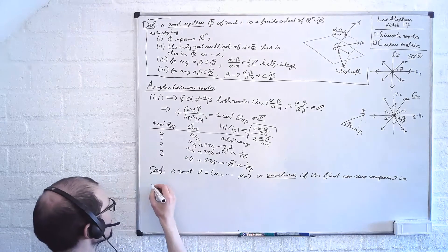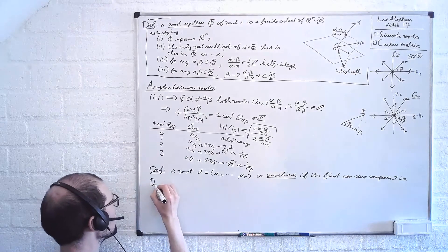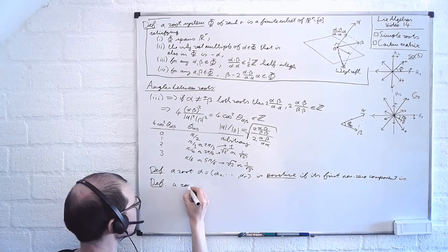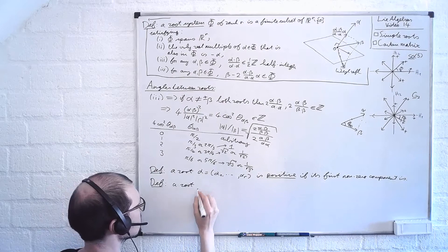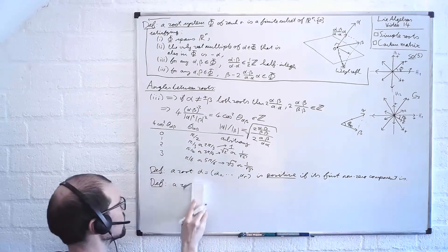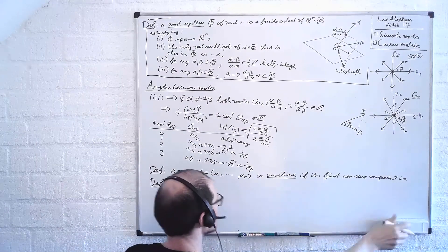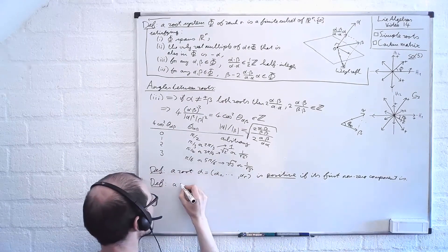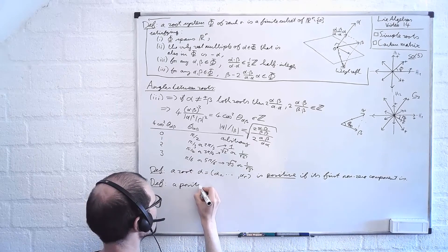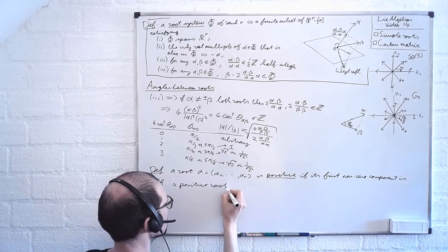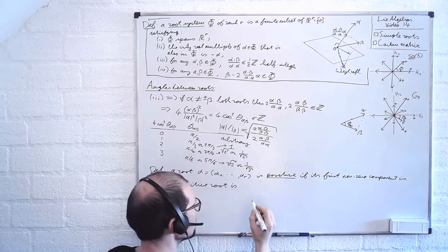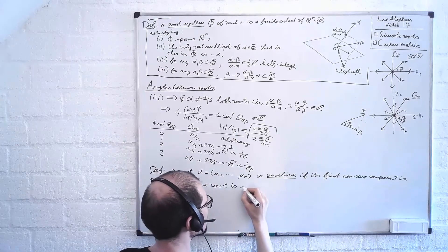And then I say that a positive root is simple if it is not the sum of two other positive roots.